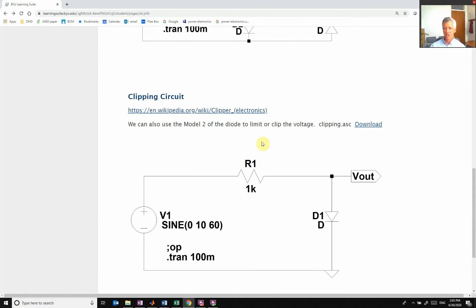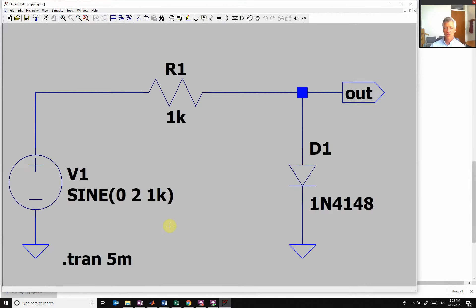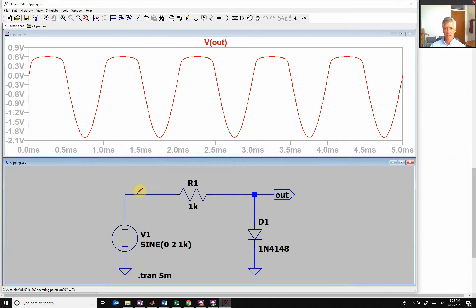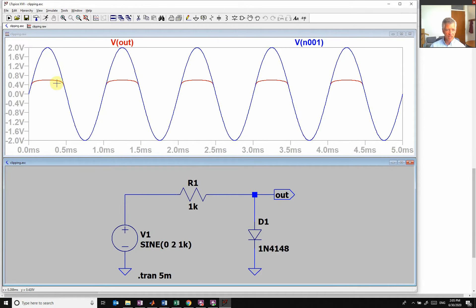So let's go look at our limiting circuit. So here is my voltage signal going up to two volts. I have a diode. And you see that when it's negative, it goes straight through. And when it goes above some value, it clips. And it clips at some small value.